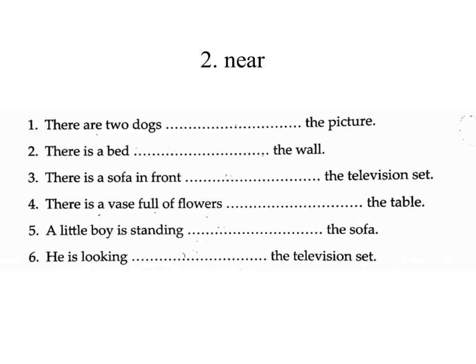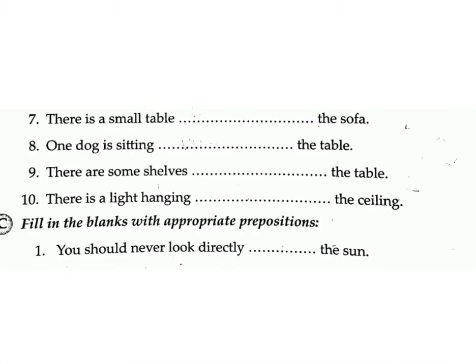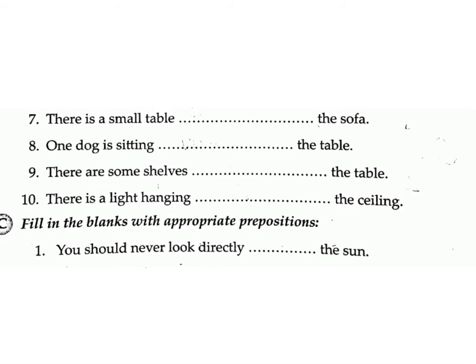Sentence 3: There is a sofa in front ___ the television set. Answer: of. Sentence 4: There is a vase full of flowers ___ the table. Answer: on. Sentence 5: A little boy is standing ___ the sofa. Answer: behind. Sentence 6: He is looking ___ the television set. Answer: at. Sentence 7: There is a small table ___ the sofa. Answer: beside. Sentence 8: One dog is sitting ___ the table. Answer: under.